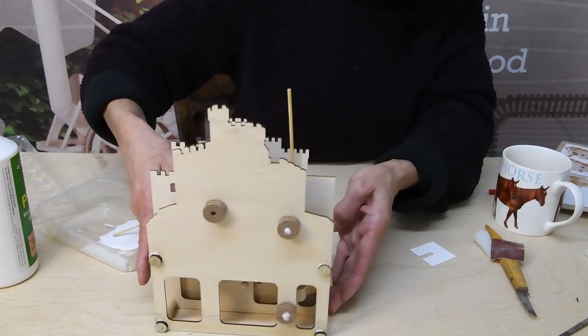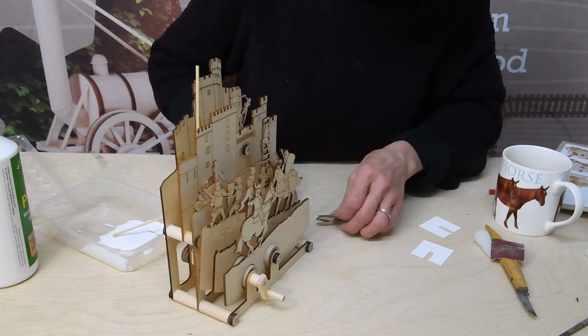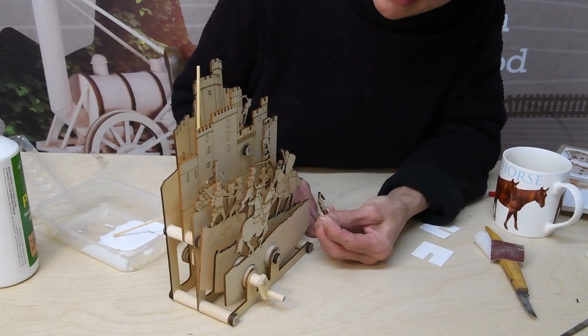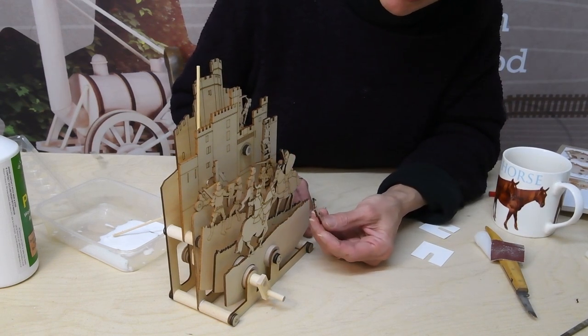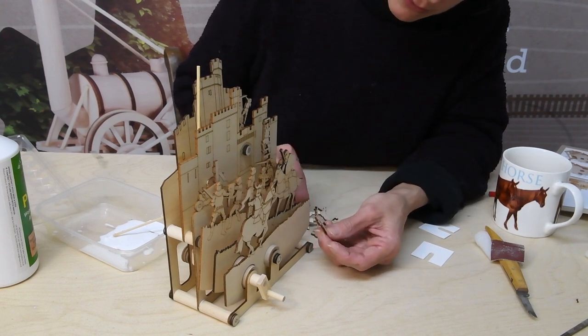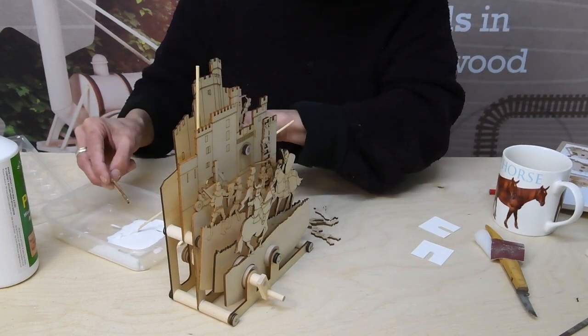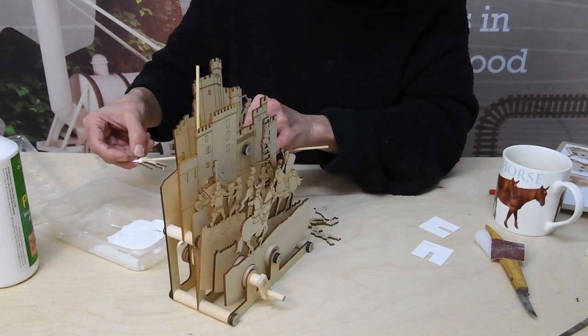While that's drying we can turn it round and put these little figures in place on the castle front. Now the instruction booklet suggests you do this at stage 15 but I like to do it right at the end because then I can look at the composition of the model as a whole and decide where I want to put them when I can see it all together.